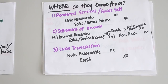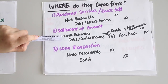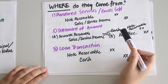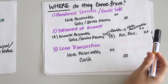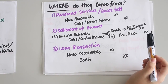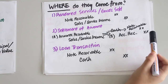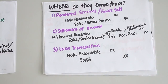A second source is the settlement of an existing account. For example, a sale was made on account — debit accounts receivable, credit sales or service income. Typically, a customer would settle by paying cash, giving a debit to cash and a credit to accounts receivable. However, if the customer still lacks cash, they would instead issue a note receivable, so the debit goes to notes receivable rather than cash.